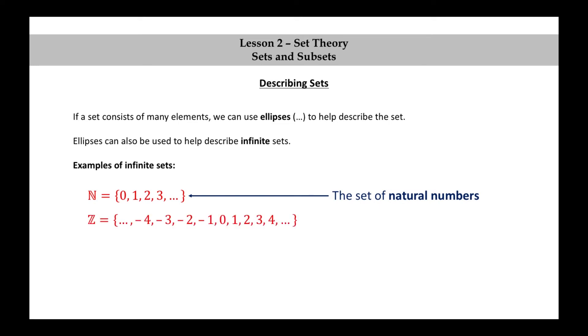Z equals dot dot dot, negative 4, negative 3, negative 2, negative 1, 0, 1, 2, 3, 4, etc. This is the set of integers.